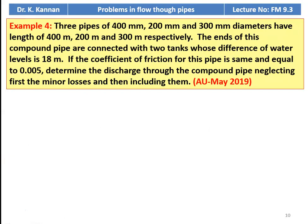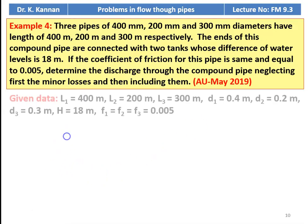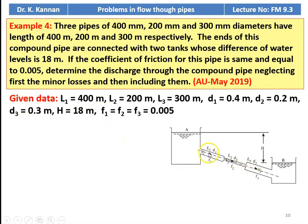Example number 4 from the May 2019 question paper: three pipes of 400 mm, 200 mm, and 300 mm diameters have lengths of 400 m, 200 m, and 300 m respectively. The ends are connected to two tanks with a difference in water level of 18 m. The coefficient of friction is the same for all pipes and equals 0.005. Determine the discharge with and without minor losses. Given: L1=400 m, L2=200 m, L3=300 m; D1=0.4 m, D2=0.2 m, D3=0.3 m; H=18 m; F1=F2=F3=0.005.